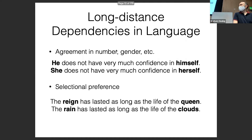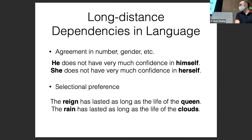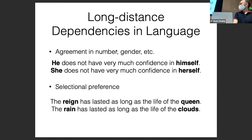Another example is selectional preference, such as in speech recognition. Consider 'the rain has lasted as long as the life of the queen' versus 'the rain has lasted as long as the life of the clouds.' The first two are pronounced the same way, but which you predict at the end depends on what you picked at the beginning. We need semantic consistency between parts of the sentence, and long intervening sequences can occur in the middle.